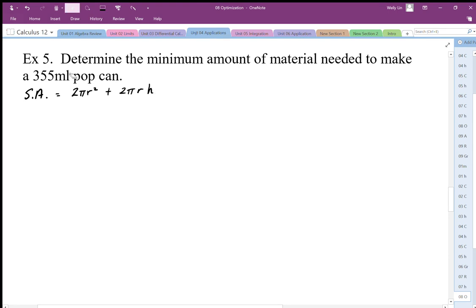I want to get rid of h and express it in terms of r. I need a formula that connects the radius and height of a cylinder, and I'm going to do that using the volume because the volume is a fixed volume. My volume, which equals 355 milliliters, is πr²h. Using this volume expression, I can solve for h and replace the h in the surface area equation. So the height is 355 over πr².